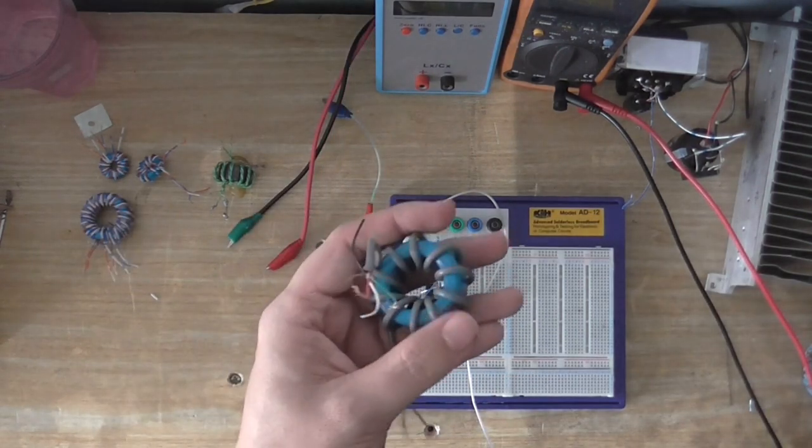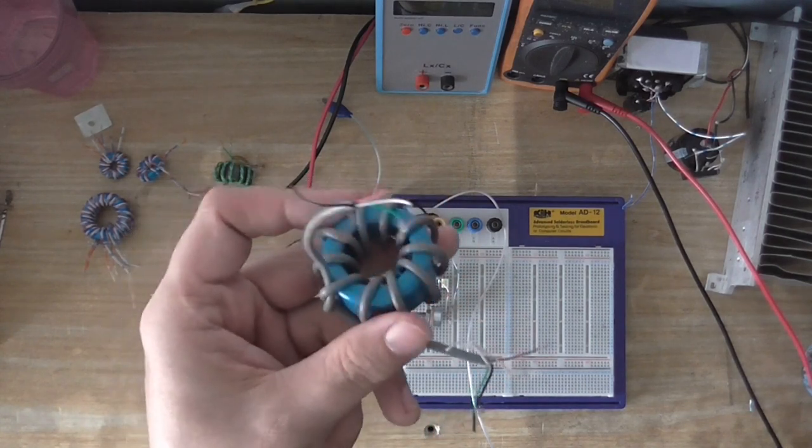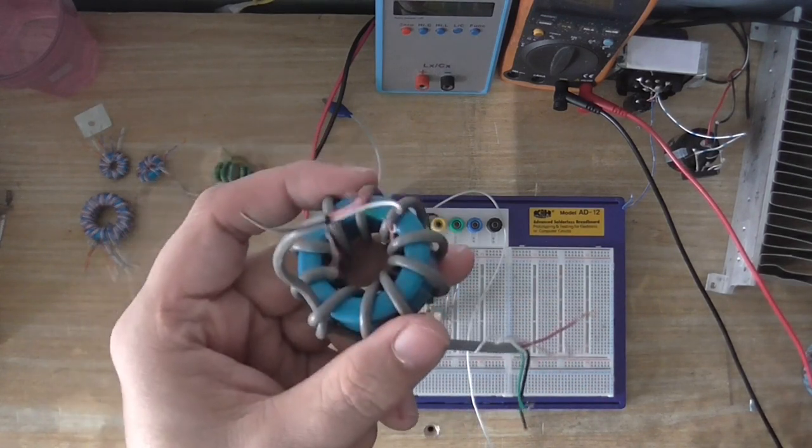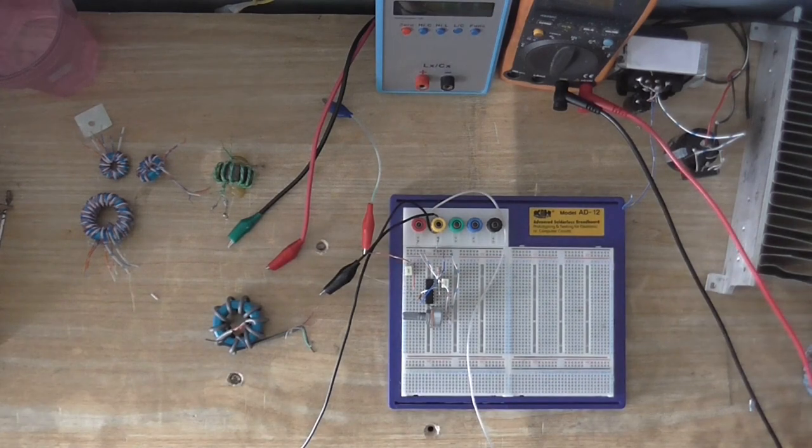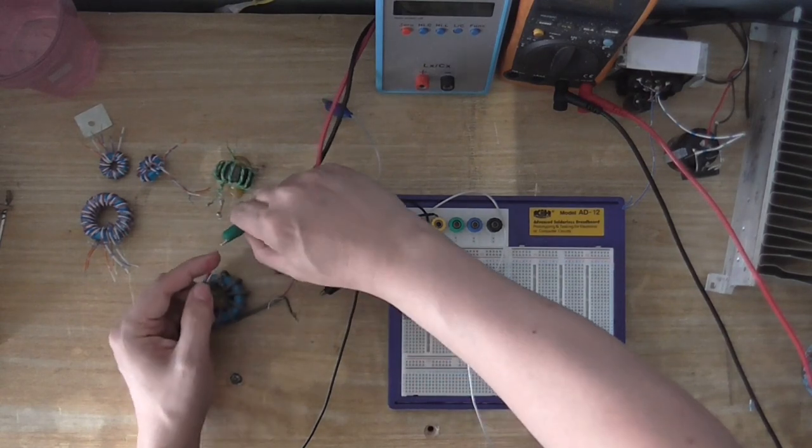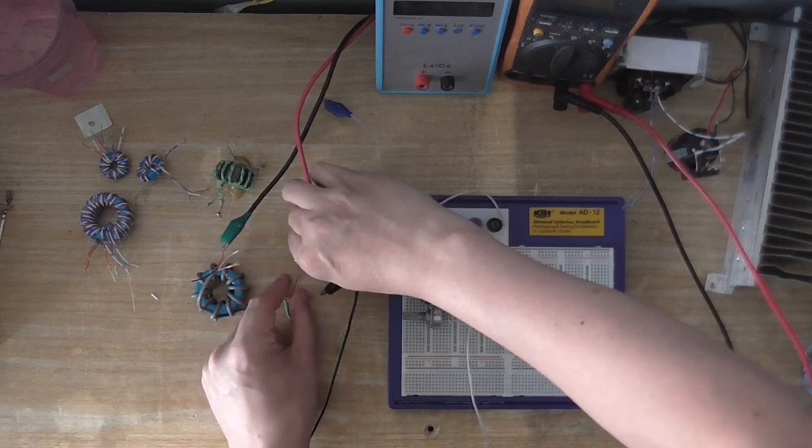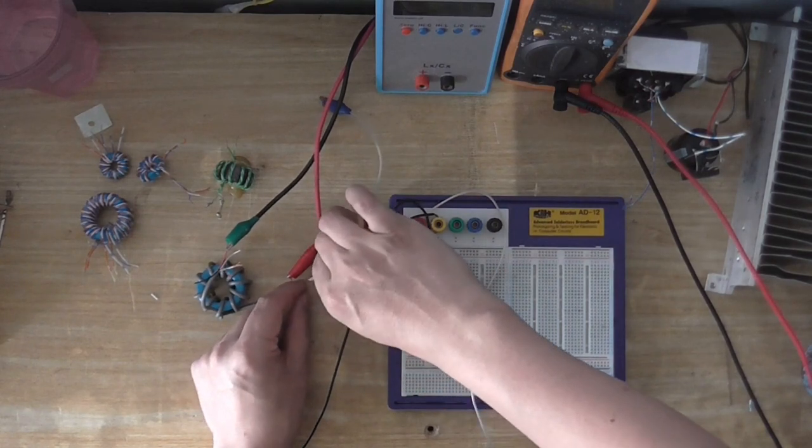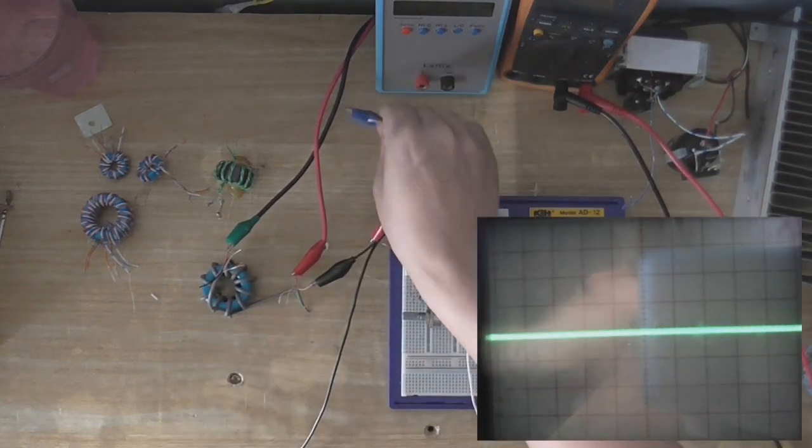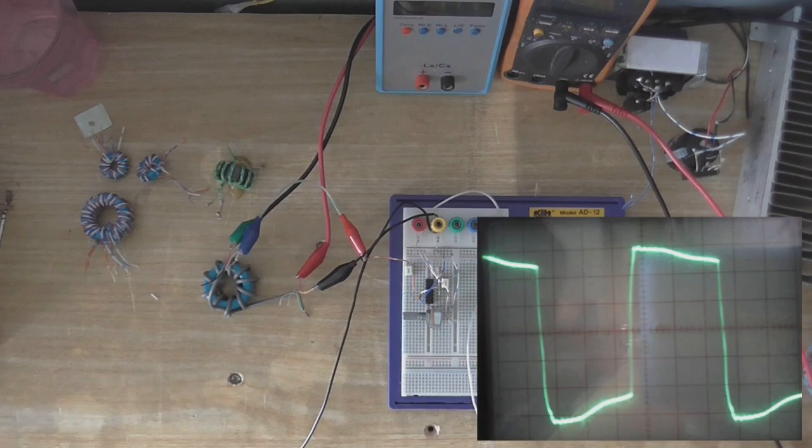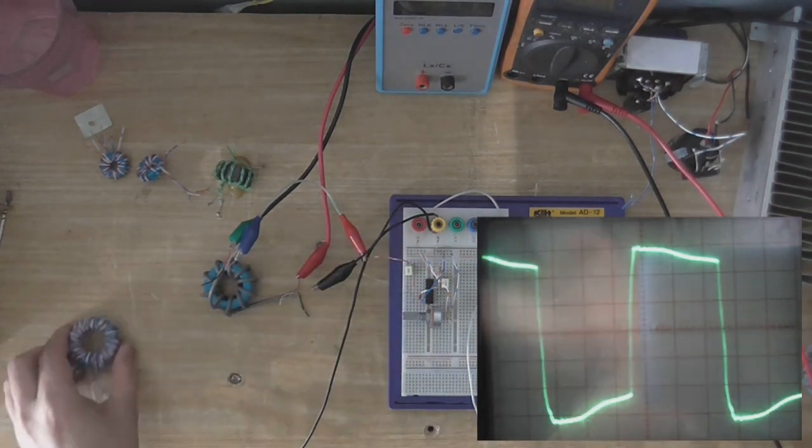And finally, this one here that's been wound with mouse cable. And I've seen people use all kinds of cable to do this kind of method of winding a gate drive transformer. Ethernet cable seems to be a pretty hot choice for these, but I've used mouse cable. So, let's connect one of the outputs to the scope and the oscillator. We can see how well this one performs. As you can see, that is also pretty good. It's not quite as good as this one is, but it's still pretty good.